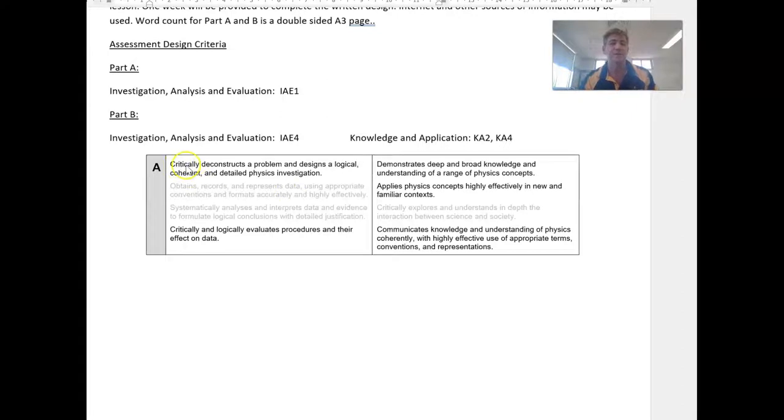So in terms of critically deconstructing a problem, it doesn't just mean brainstorming. Brainstorming is probably, I consider it to be in the C level, and mostly because lots of students across all year levels can just throw some ideas out there that might stick and might be related to the content. Critically deconstructing a problem, however, means that those ideas are considered, those ideas are justified, those ideas are also related back to the subject outline and the dot points on the left-hand side. If you teach SACE, you should know what I mean.